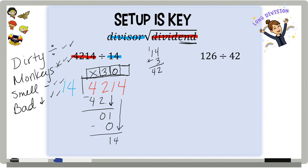Now I'm going to bring down the 4. Now I go through my process again. How many times can 14 go into 14? Once. 14 times 1 is 14. I subtract, and I have nothing left to bring down. And I have a remainder of 0. So my answer is 301.